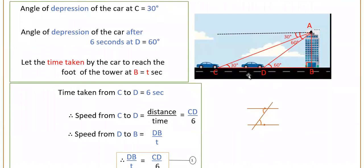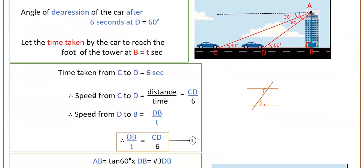Since the speed is the same throughout, we can equate the speeds. Speed equals distance by time, so from C to D: speed = CD/6, and from D to B: speed = DB/t. Since speeds are equal, DB/t = CD/6. This is our first equation.